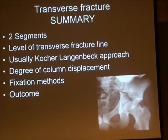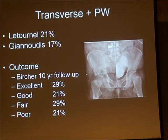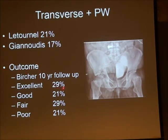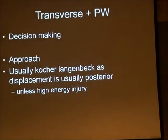Moving on to the transverse posterior wall — in two series this accounts for between 7 and 21% of acetabular fracture types. The outcome for this injury is poor: only 29–30% excellent outcome at 10 years. These are more difficult than simple transverse fractures, requiring important decision-making about approach. Usually a Kocher-Langenbeck approach is used if displacement is posterior, unless something indicates otherwise.